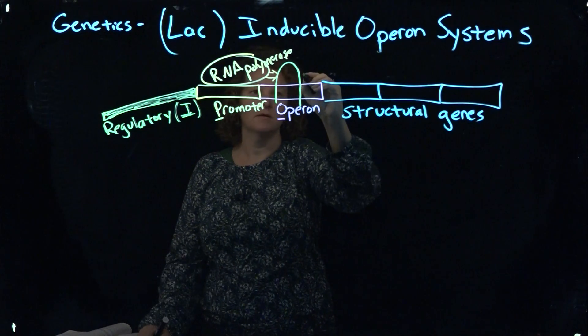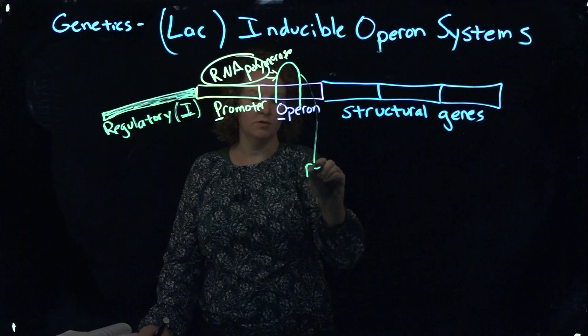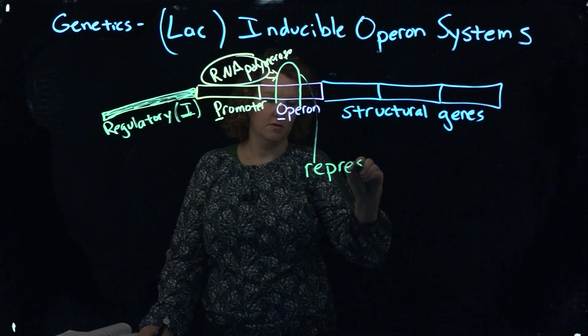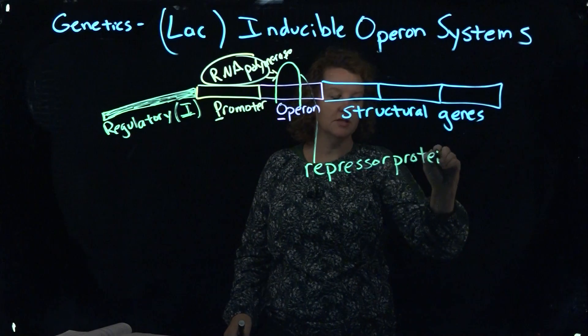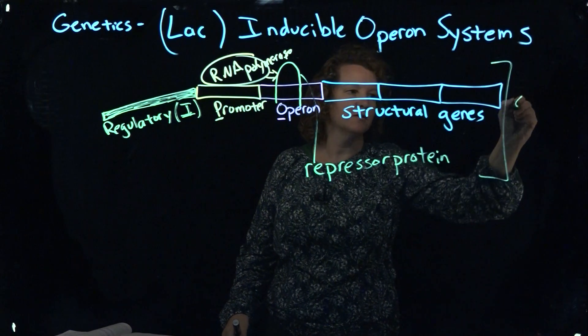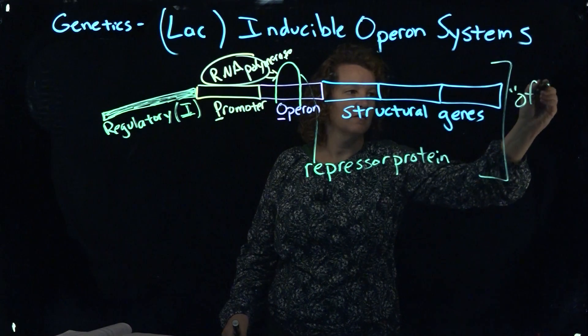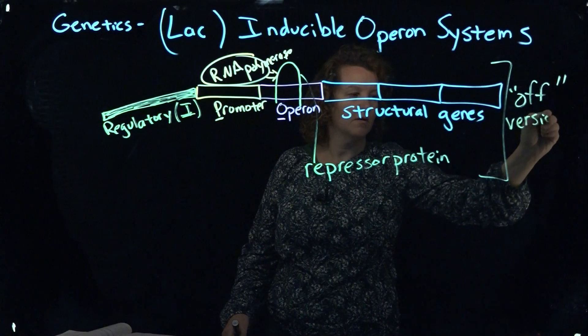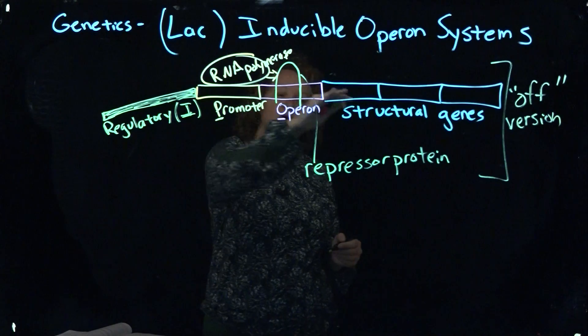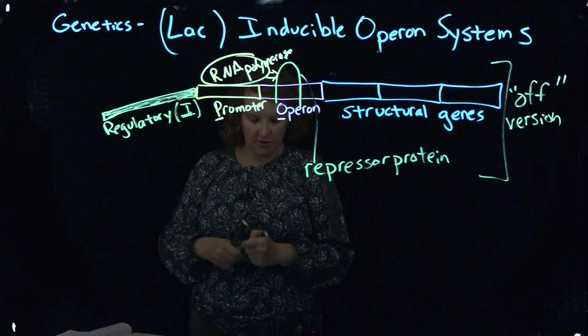That's our repressor protein. So this is the off version of the system. So you are unable to make messenger RNA.